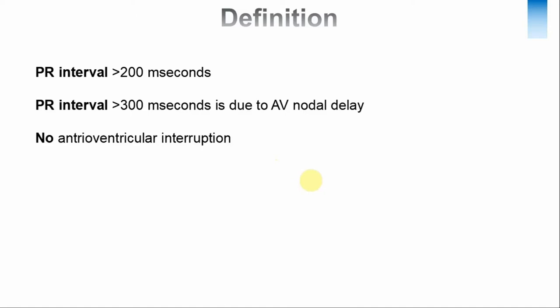So what is a first degree atrioventricular block? A first degree atrioventricular block is a condition when the PR interval — that is from the beginning of the P wave to the beginning of the QRS complex — is more than 200 milliseconds, or more than five smaller squares or one larger square. There are certain situations where the PR interval is really big, say more than 300 milliseconds, and if that is the case then probably the problem is in the atrioventricular node. The first degree heart block does not necessarily need to be in the AV node; it can be in the atria, at the level of the bundle of His, or even at the right or left bundle branches.